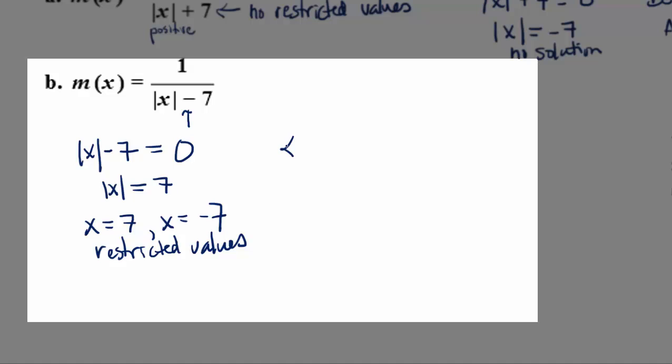Since we're going to write our answer in interval notation, I find using a number line is really helpful. What I'm going to do is I'm going to mark off the restricted values, negative 7 and 7, in their proper numerical order. I'm going to cross them off because these are the numbers that we don't want. What we do want is everything in between.